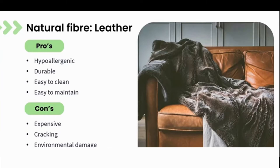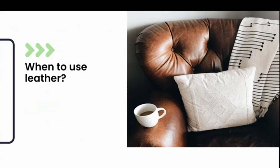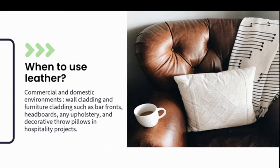When would you consider specifying leather? Commercial and domestic environments are really good areas. Common commercial uses include sofas, wall claddings, furniture cladding, and bar fronts. In domestic use: headboards, upholstery, and decorative throws or pillows. Leather is great for high traffic zones — restaurants, hospitality, and commercial environments. It can also serve as an elegant, luxurious finish. Leather can come as 100% natural leather or as faux/synthetic leather, which is used when real leather is unethical or when the budget doesn't allow for real leather.